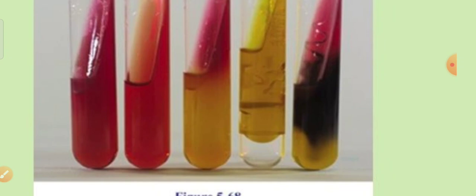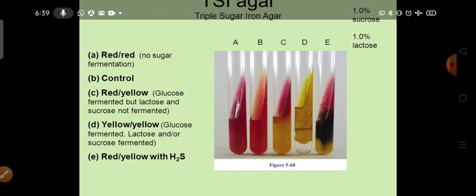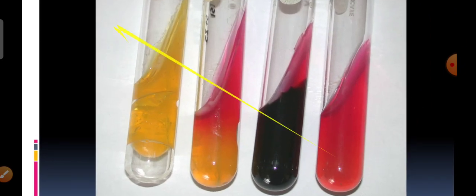E. coli also produces gas. To check gas production in TSI agar, you can see the slant and the butt are lifted up — there is a hollow where gas is collected in the medium. Sometimes the gas cracks the medium as well. So the first tube shown corresponds to E. coli, while the second, third, and fourth tubes are shown by other organisms.